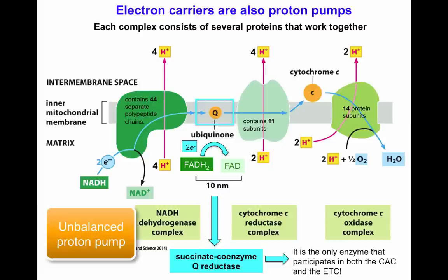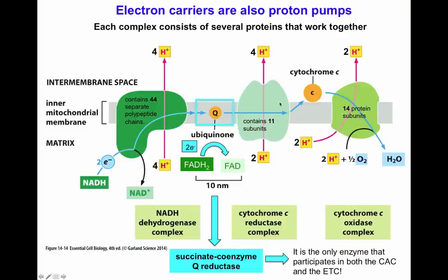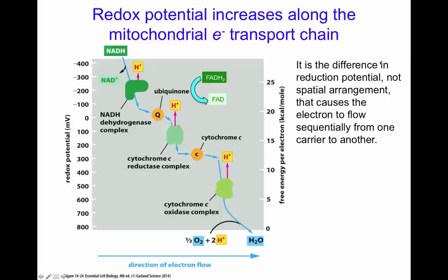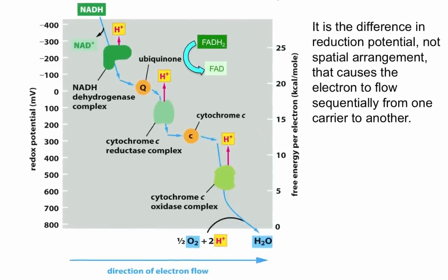Between the cytochrome C reductase complex and the cytochrome C oxidase complex, cytochrome C serves as an electron carrier. Each cytochrome C shuttles one electron between the two complexes. It is at the cytochrome C oxidase complex where oxygen is ultimately reduced to generate water. In the process of electron transfer, two protons are pumped across the membrane into the intermembrane space.